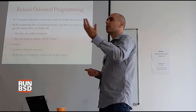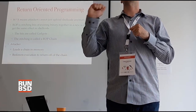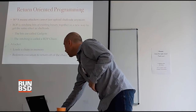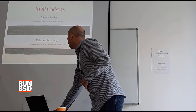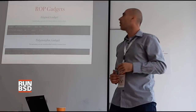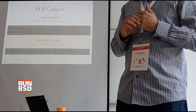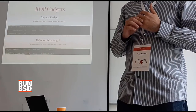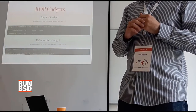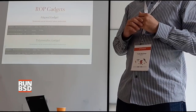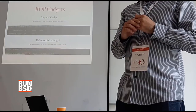The attacker loads its chain in memory, then redirects execution of the program to start returning off of that chain. We've got two kinds of gadgets: aligned gadgets and polymorphic gadgets. An audience member asks: are there real-world examples of this? Most exploits in the last long while use ROP — use-after-free exploits, stack corruption exploits, they're all using ROP. If you ever play CTFs, capture the flag challenges, they're all ROP nowadays.